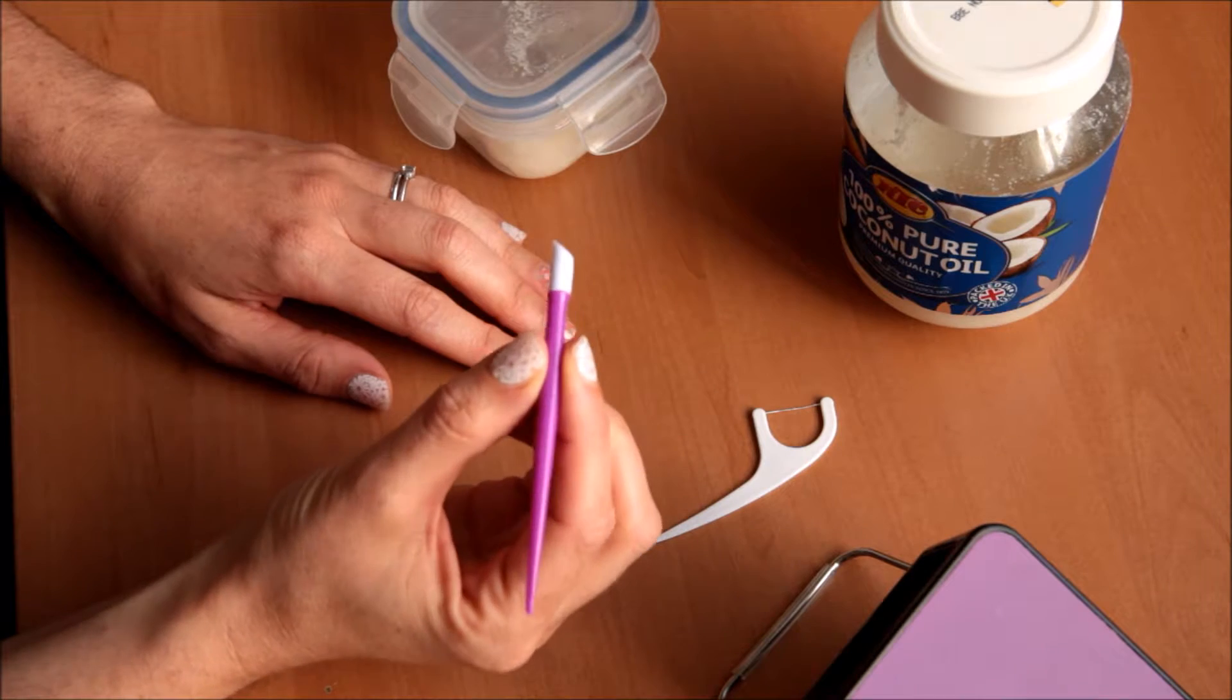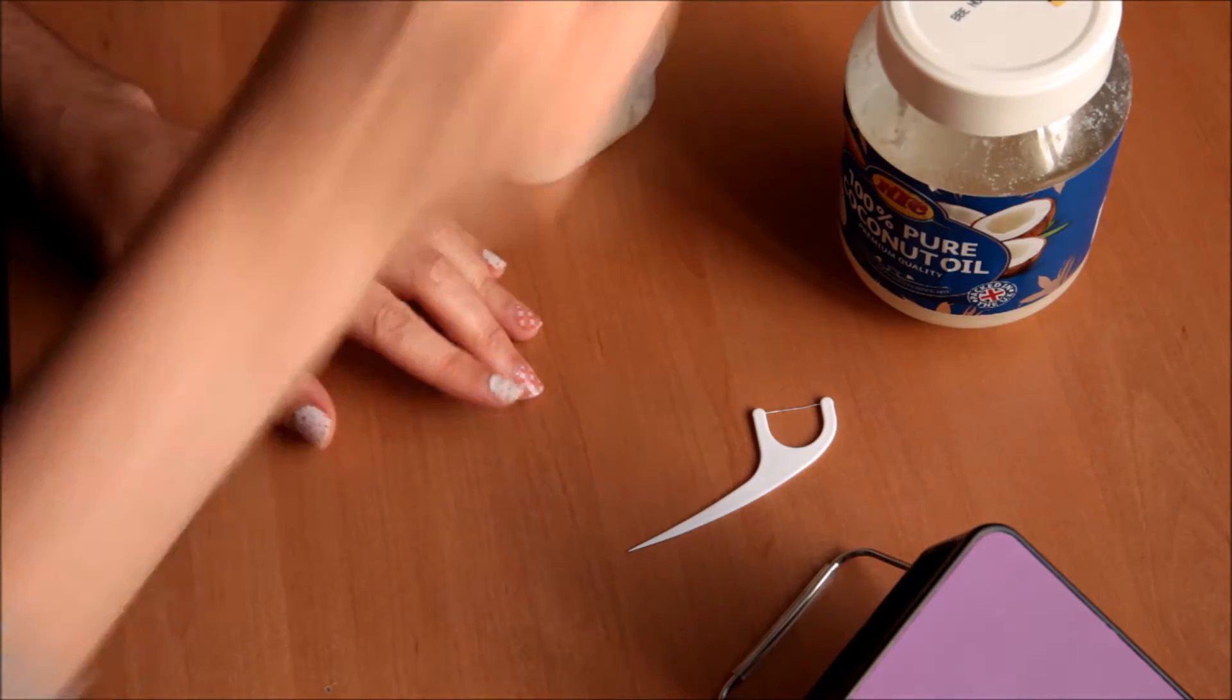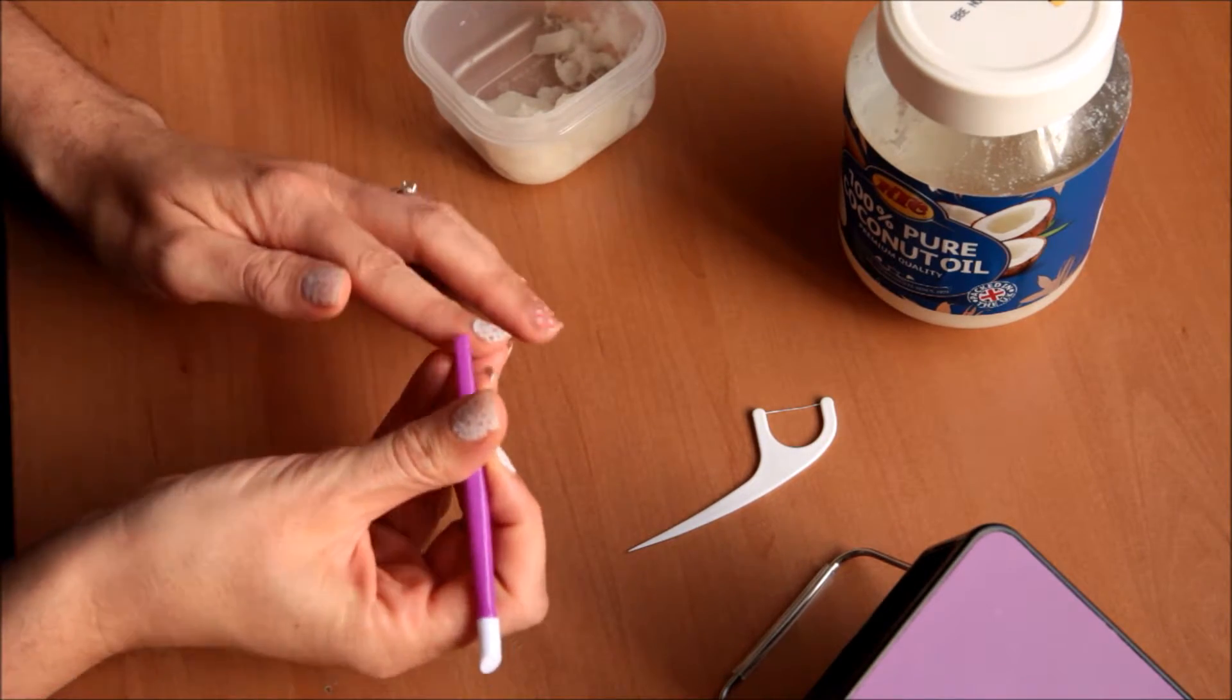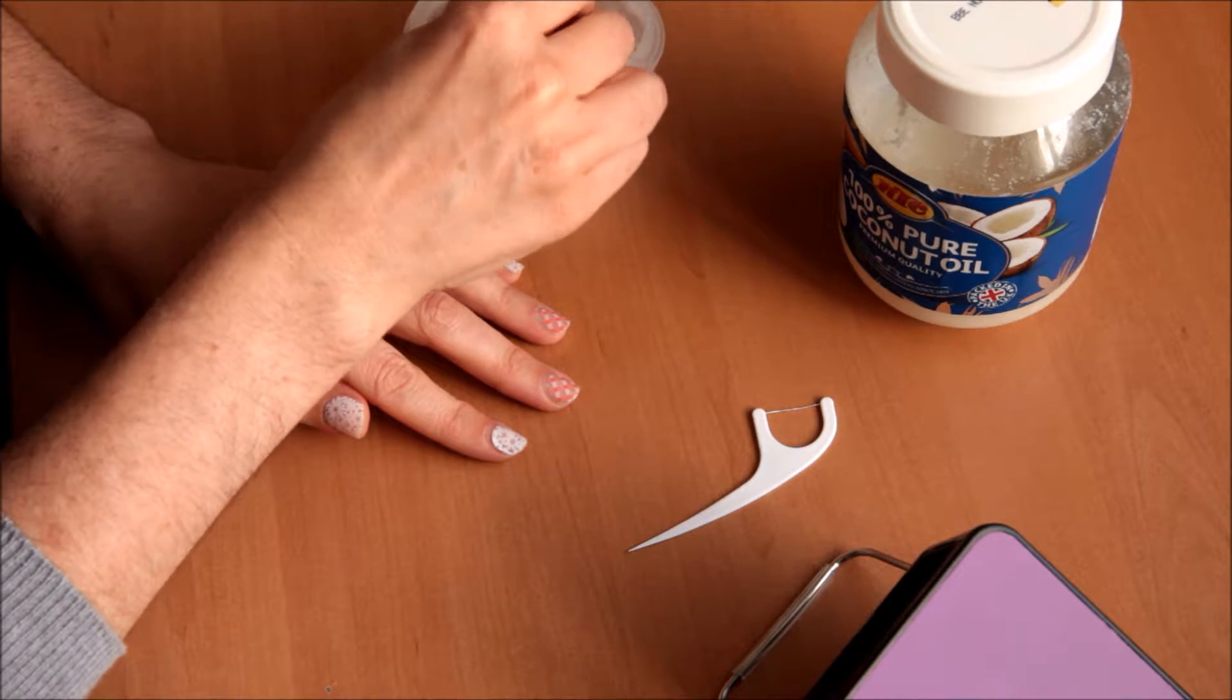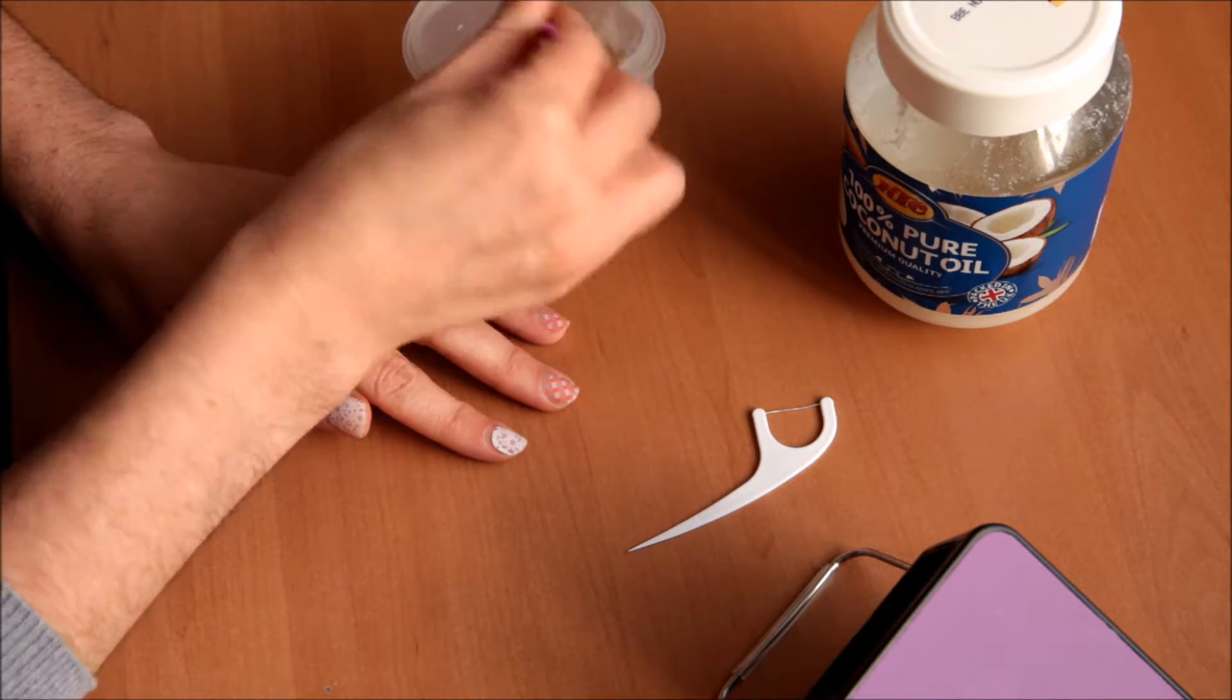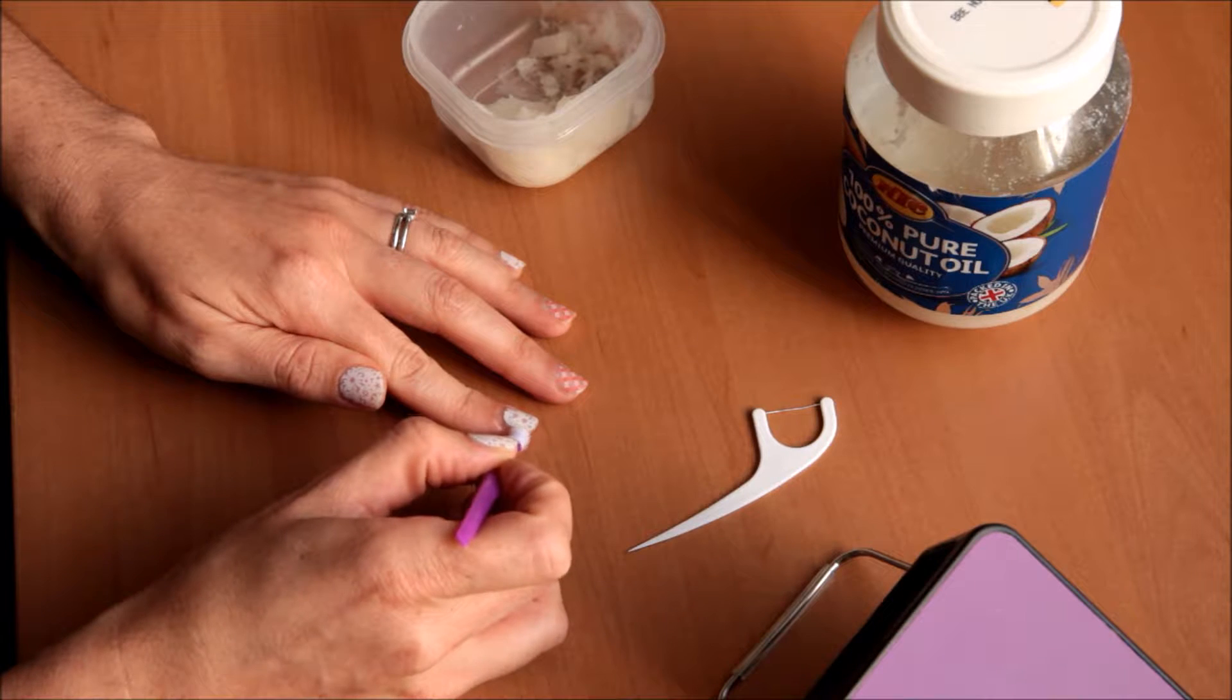I'm going to first start with the rubber cuticle pusher. The first thing that you want to do is break the seal around the edge. Now you can either do it with the end of the pusher or with your thumbnail. I'm just going to do it with the thumbnail. Now I just need to dip this into the coconut oil. I don't need to melt the coconut oil as it will melt as it goes onto my nail and I'm just going to rub it underneath the wrap.